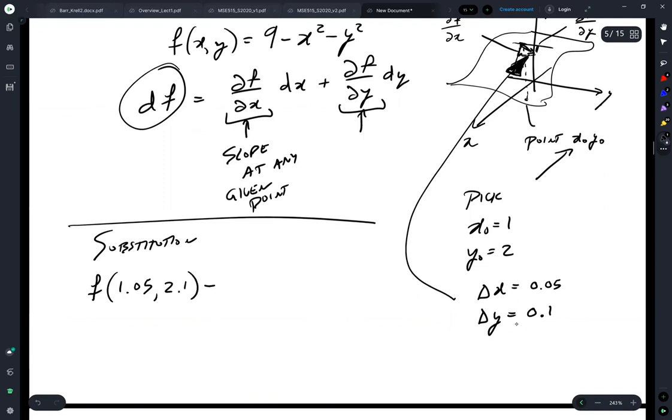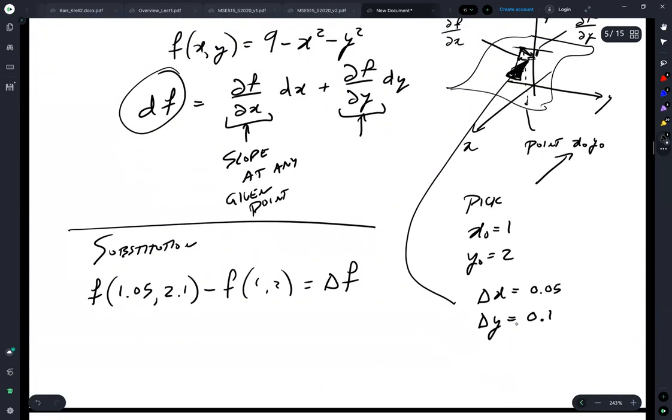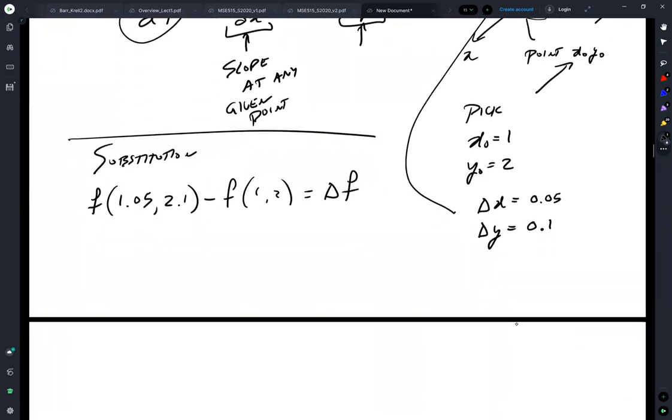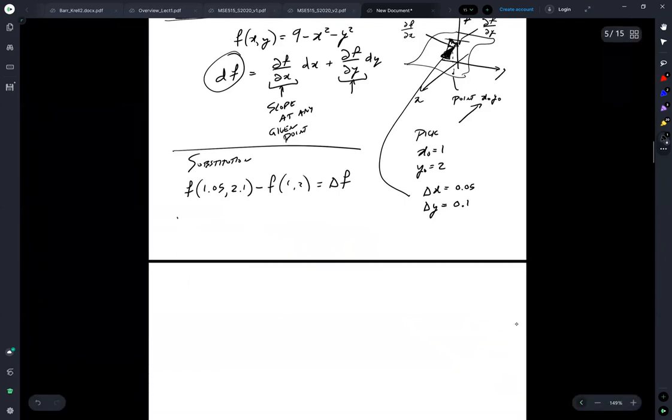Now substituting into that, I'm not going to write it out, you can figure out how to substitute in. You get delta f, I'm going to call this substitution, is equal to minus 0.525.